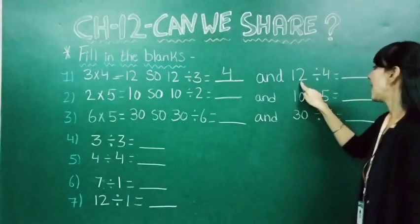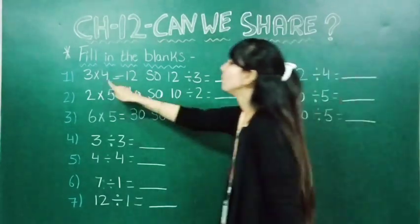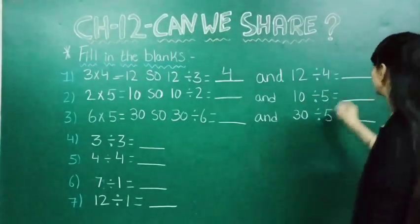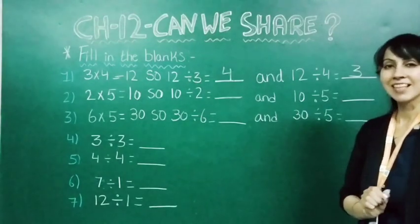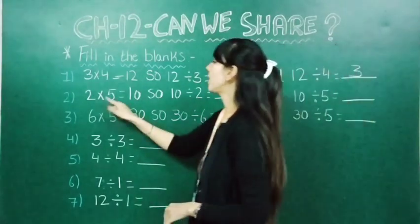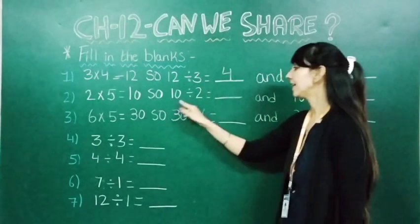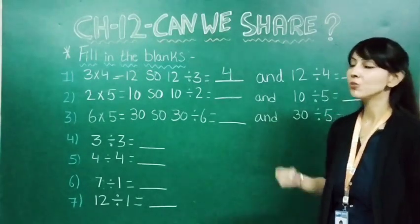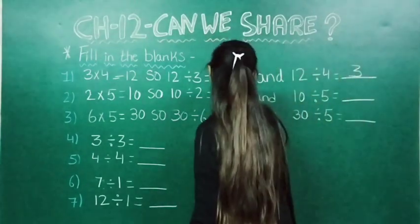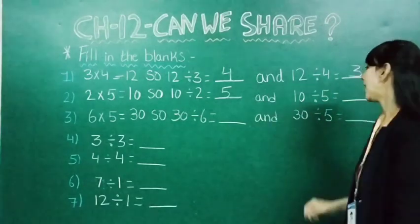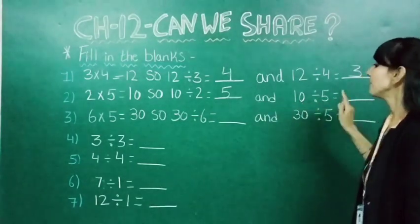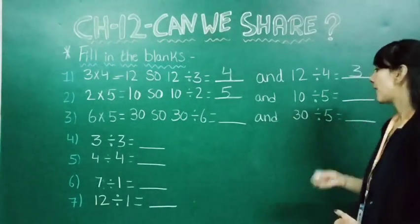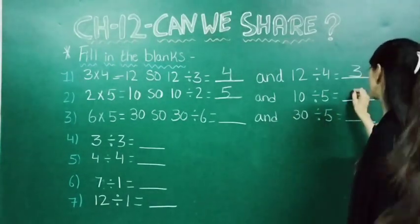We divide by the number in the multiplier's place. When twelve comes in the table of three? Four threes are twelve — so the answer is four. Now twelve divided by four: when twelve comes in the table of four? Three fours are twelve — so the answer is three. Next: two fives are ten. Ten divided by two — when ten comes in the table of two? Two fives are ten, so here it will come five. Ten divided by five — when ten comes in the table of five? Five twos are ten, so here it will come two.